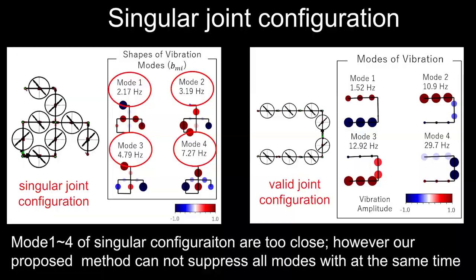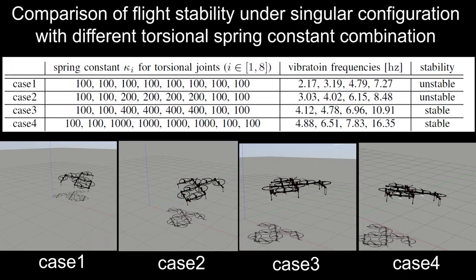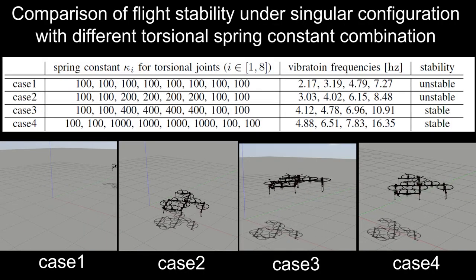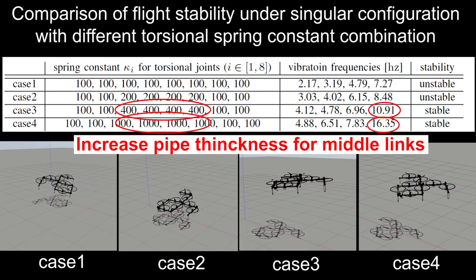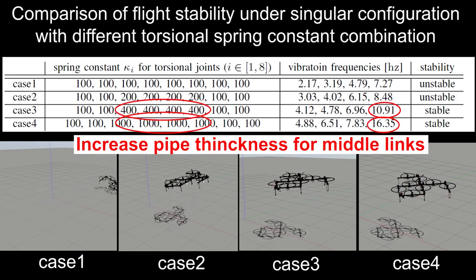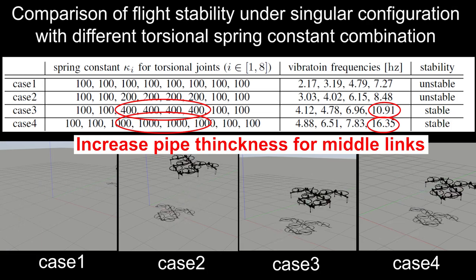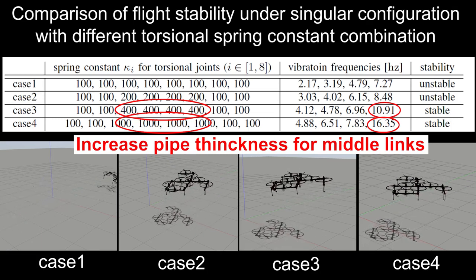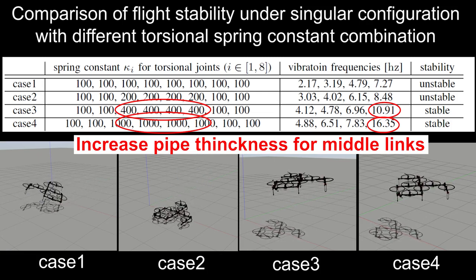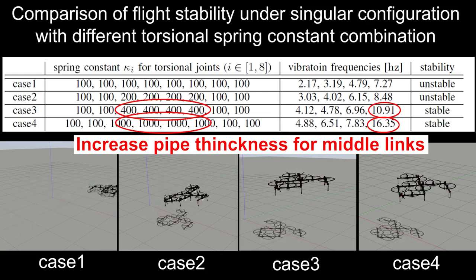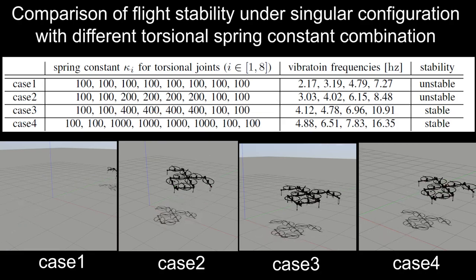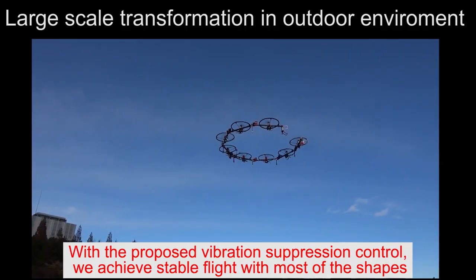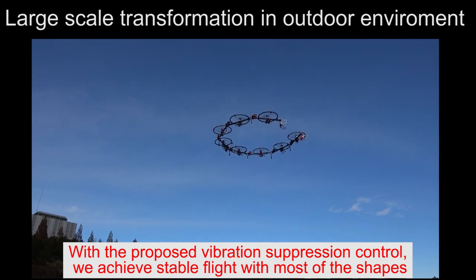Compared to the valid shapes, we then evaluated the vibration behavior by modifying the spring constant for torsional joints, allowing different spring constants for different links. The table shows that stable hovering can still be achieved under this singular shape if the gap between mode 1 and mode 4 is sufficiently large. This result proves our hypothesis about the singularity.